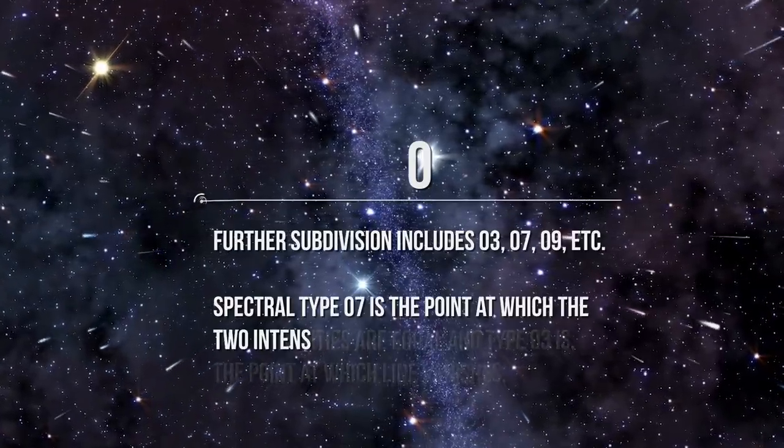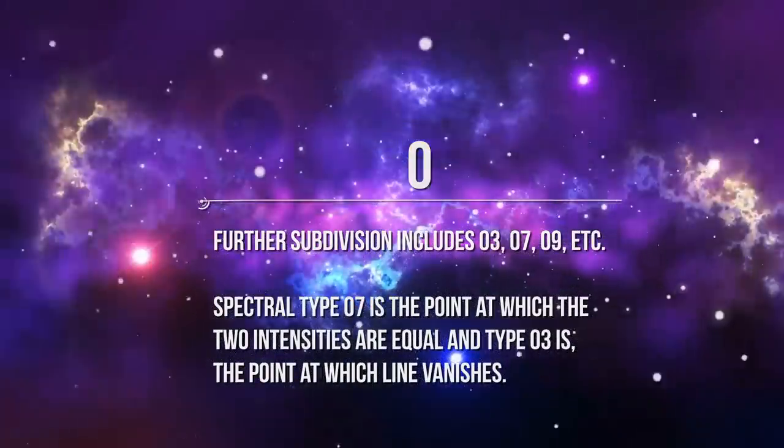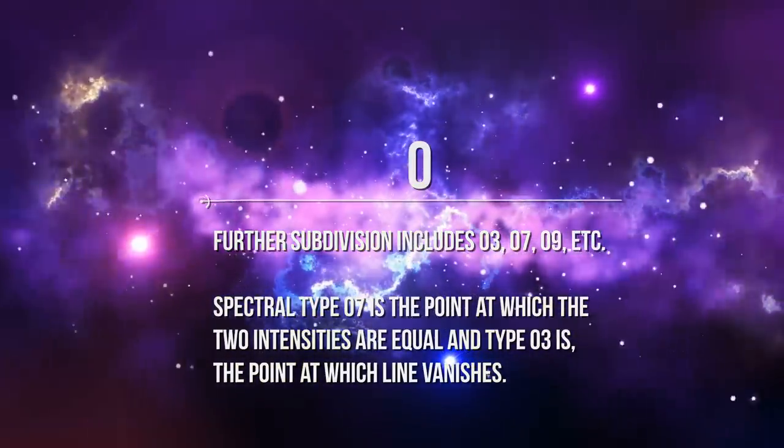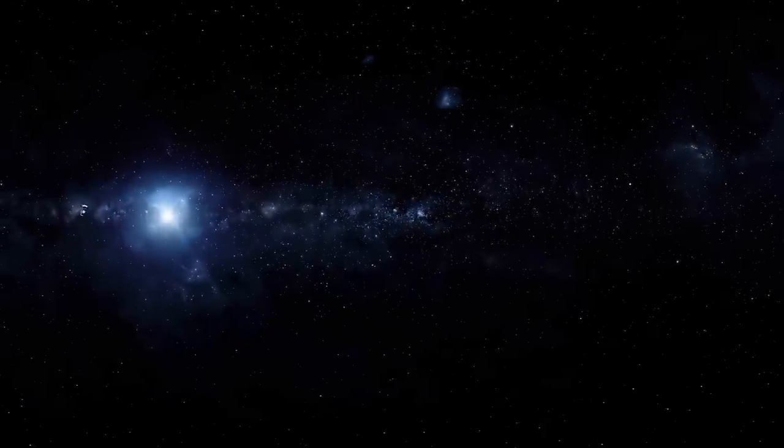Further subdivision includes O3, O7, O9, etc. Spectral type O7 is the point at which the two intensities are equal and type O3 is the point at which line vanishes.